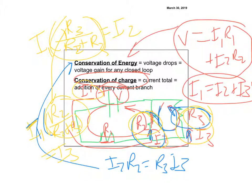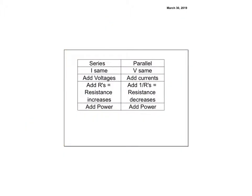Summary: in series, current I is the same everywhere; in parallel, voltage V is the same. In series, voltages split (bigger R = bigger voltage drop). In parallel, currents split (bigger R = less current). In series, resistance adds and increases; in parallel, use one-over and resistance decreases. In both cases, total power is just the sum of individual powers.